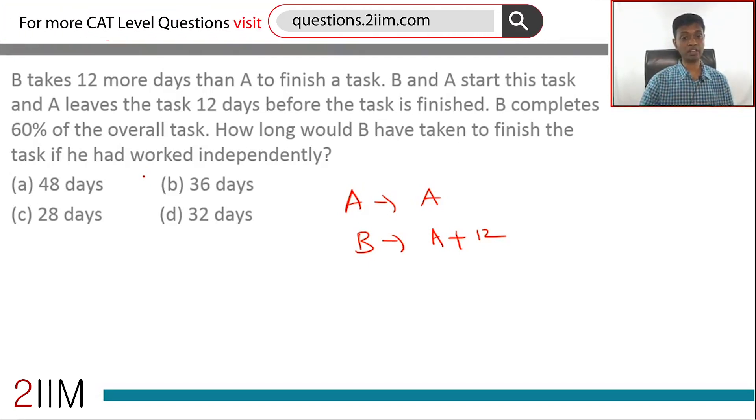How long would B have taken to finish the task if he had worked independently? Think about this: B finishes 60% of the task, so A would have finished 40% of the task.